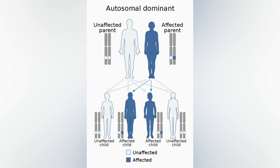VWD type 1 is the most common type of the disorder, with mild bleeding symptoms such as nosebleeds, though occasionally more severe symptoms can occur. Blood type can affect the presentation and severity of symptoms of VWD.